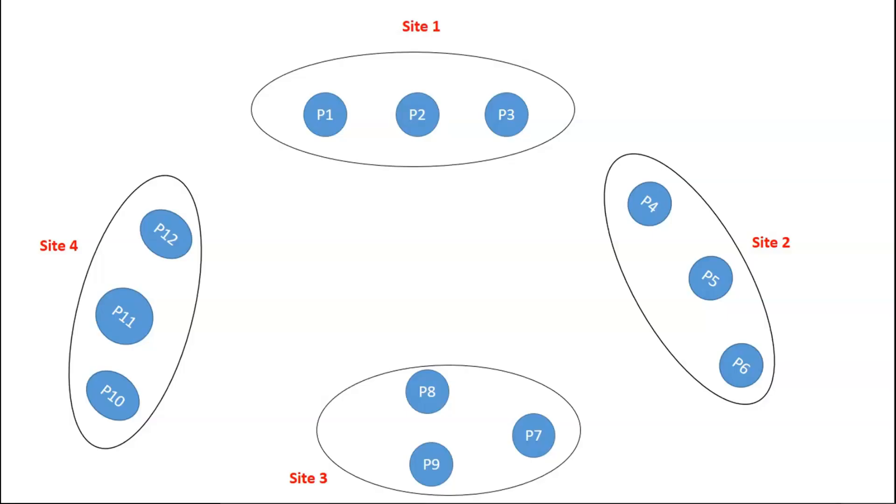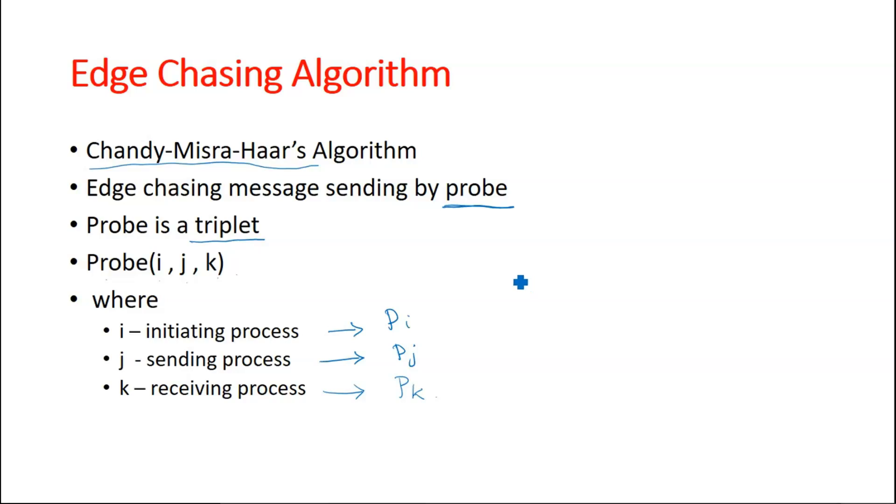So in this example, in site one there are two processes pi and pj.